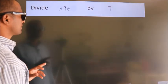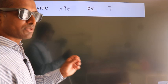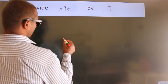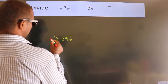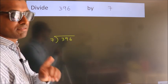Divide 396 by 7. To do this division, we should frame it in this way: 396 here, 7 here. This is step 1.